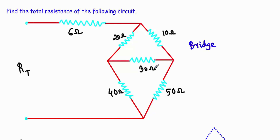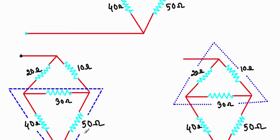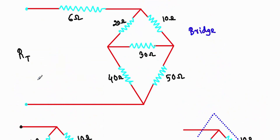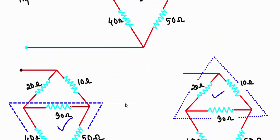This looks like a Wheatstone bridge. If you see the circuit, it contains two Delta circuits separately — there is a Delta in the lower portion and a Delta in the upper portion. That means I have to perform Delta to Y conversion on either one of these Delta circuits to calculate the total resistance RT.